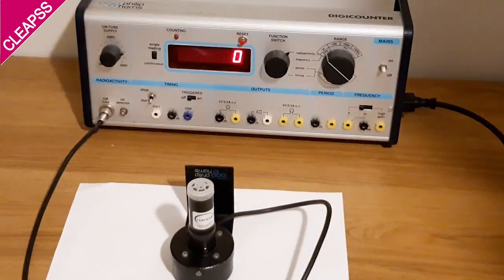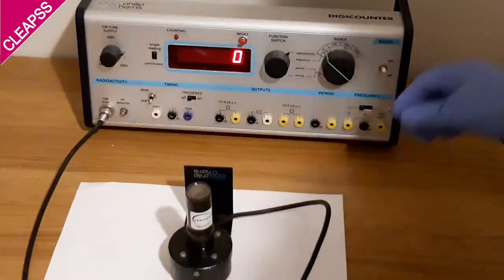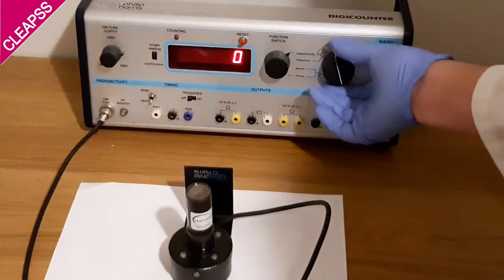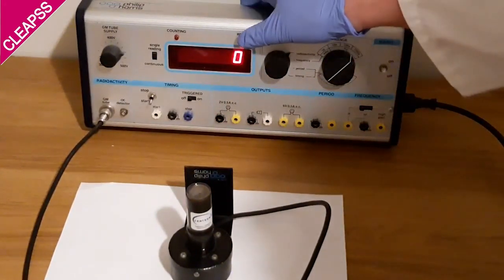So first of all I do a background count and I take the cap off the GM tube, set the voltage to 450 volts if it's variable, set the timer for 1000 seconds and start to count.